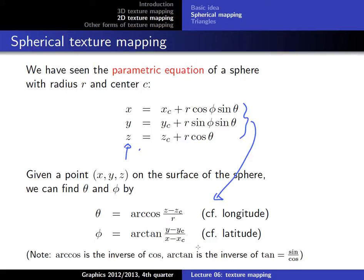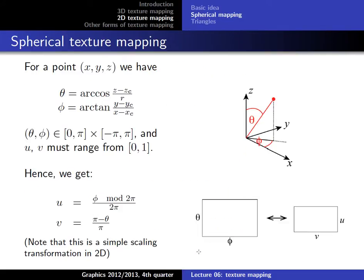We can calculate the angle based on the coordinates of the point and then map that to our texture space. Note: the image I used for the sphere contained a few mistakes with the angles — be careful with that, sorry for that. I am redoing most images this year and it is a lot of work, so there may be a few mistakes. Be very critical with the images and let me know if you find mistakes.